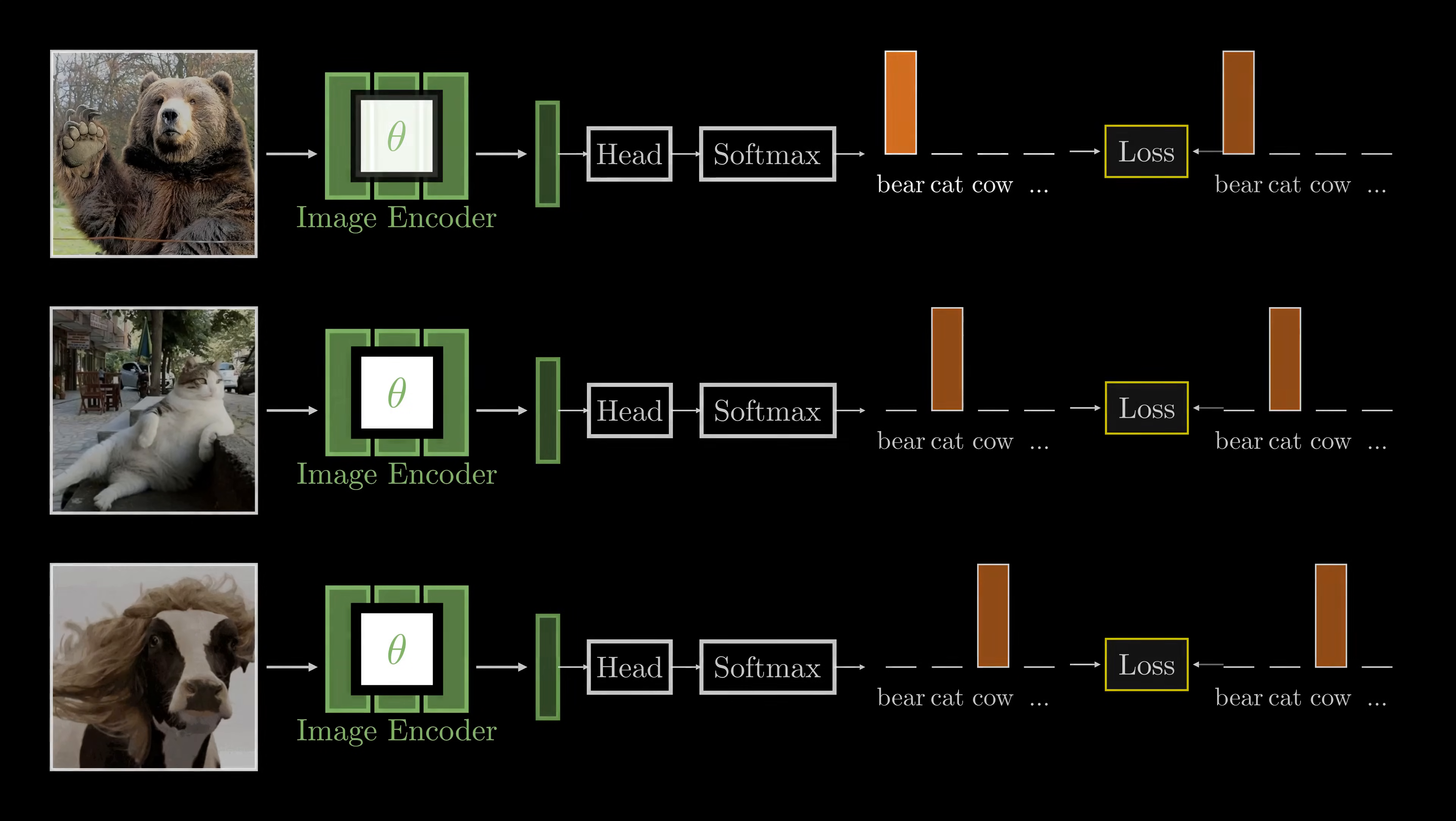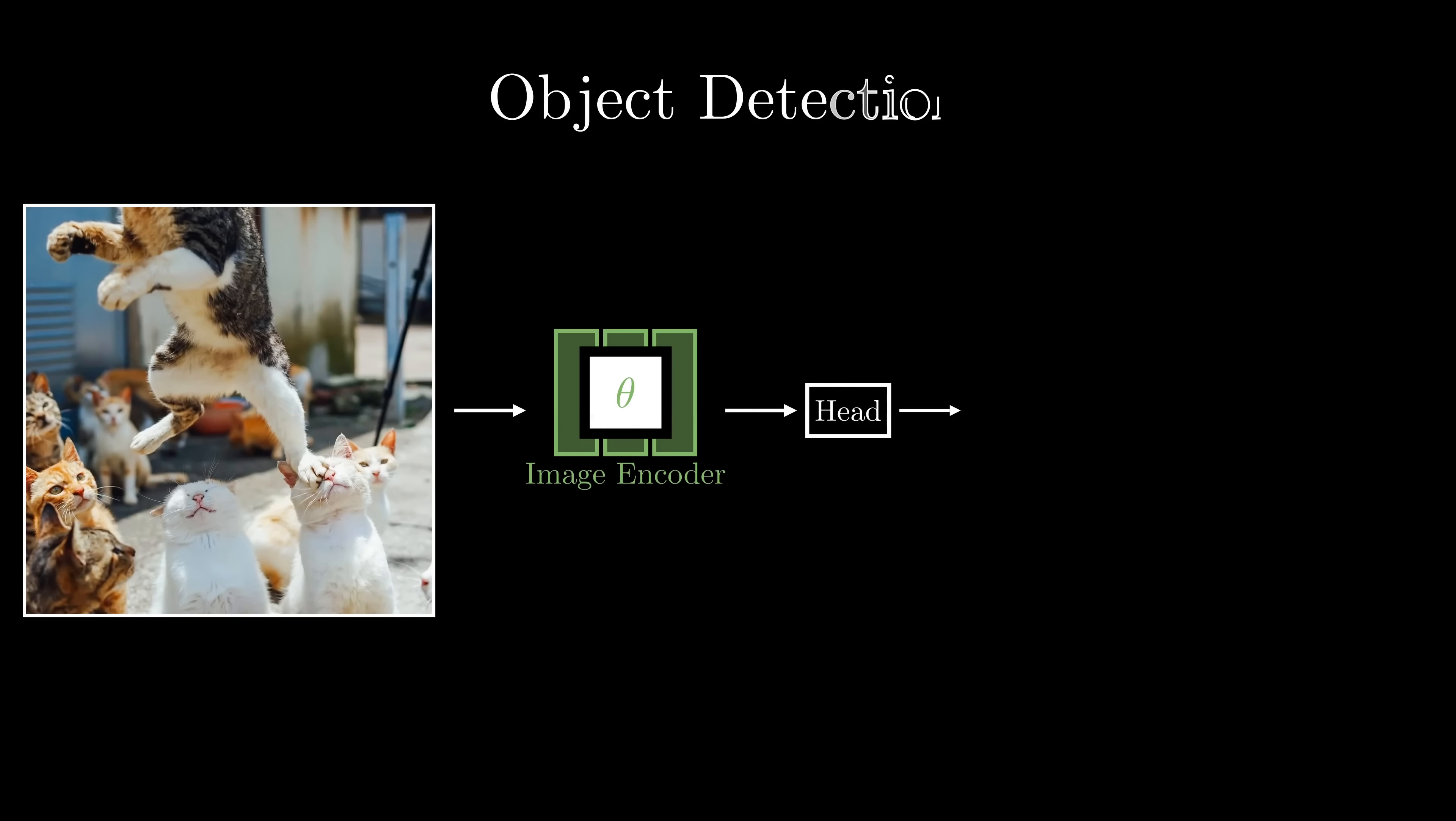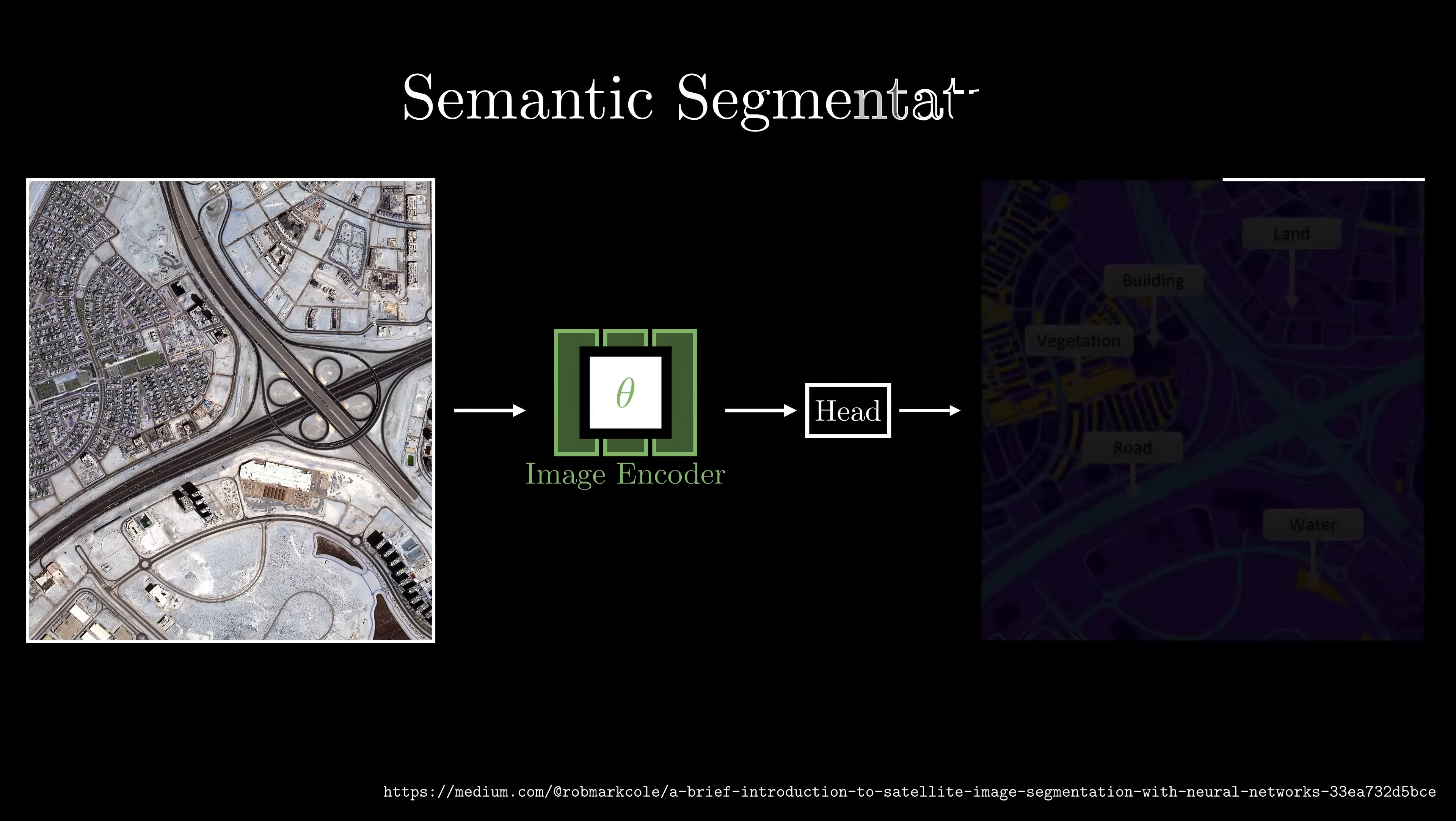After training the model on a large label dataset, we can use its learned weights as a great starting point for new tasks. This process is called transfer learning. It allows us to fine-tune the model for a wide range of applications, such as fine-grained classification, object detection, or semantic segmentation.